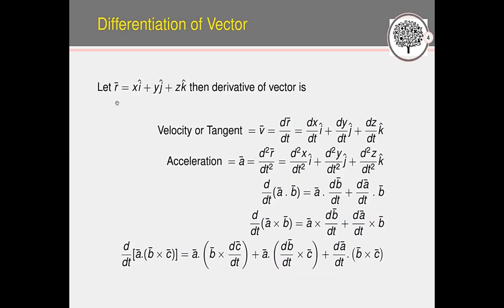Next, the position vector. Taking the origin as a reference point, we measure the distance along the x, y, and z axes. Let r be the position vector: r = xi + yj + zk, where x, y, z are distances along the respective axes. For vector differentiation, the derivative dr/dt gives the x-component dx/dt, y-component dy/dt, and z-component dz/dt. This dr/dt is also called the velocity vector or tangent vector.